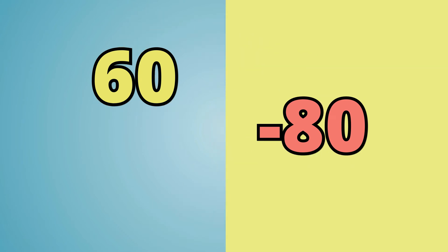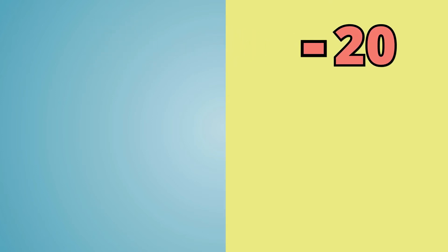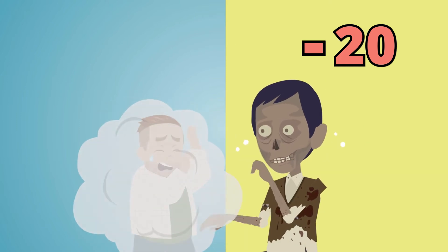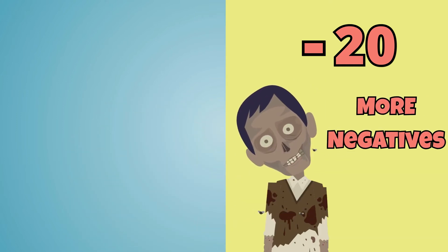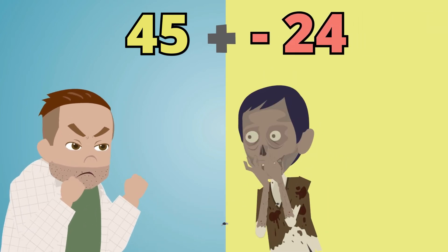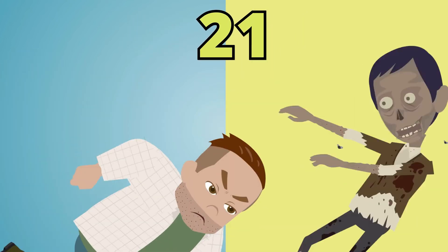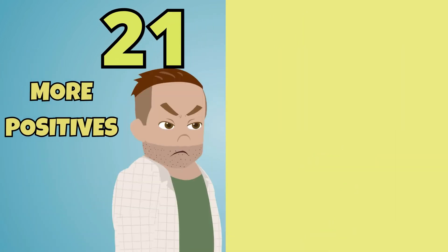To find our answer, we simply have to subtract 80 from 60. Our answer will be negative 20 because we have more negatives than positives. If we were adding 45 and negative 24, we will have to subtract 45 minus 24 and our answer will be positive because we have more positives than negatives.